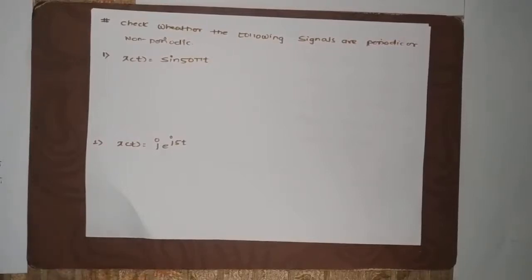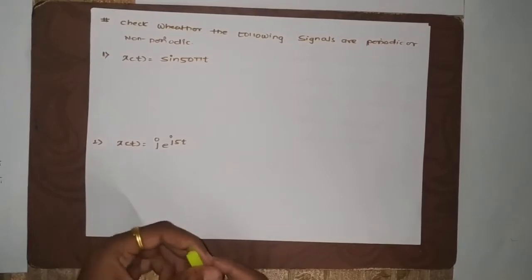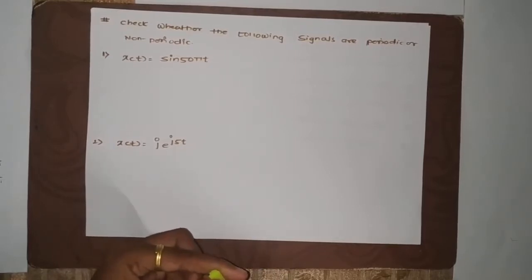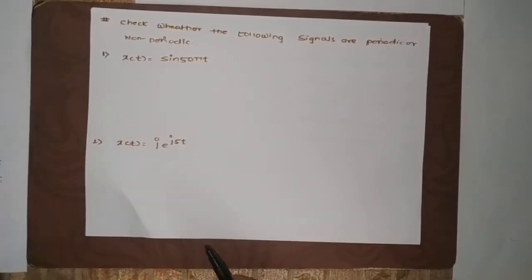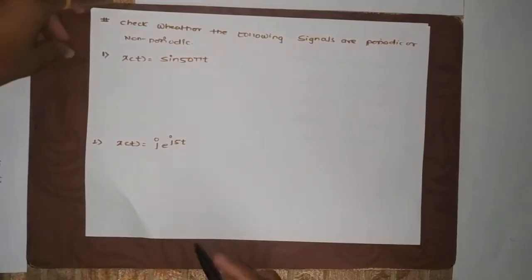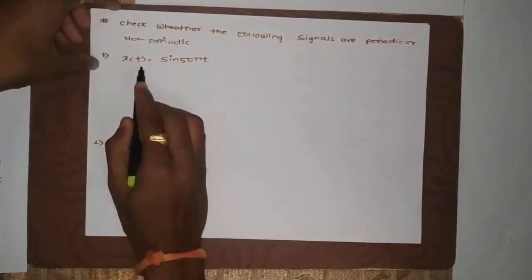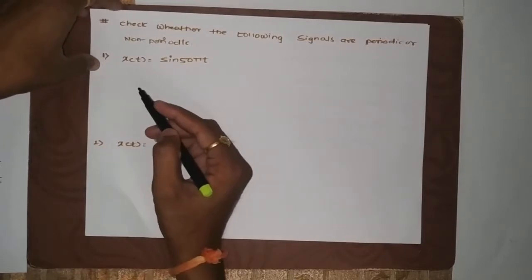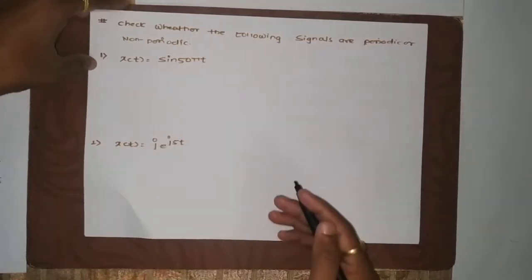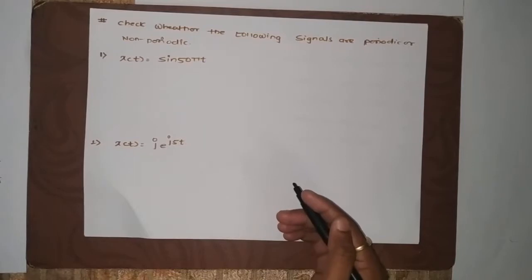In this video, we will discuss determining whether given signals are periodic or aperiodic in nature. The first example is x of t — a continuous time signal — and we have to check whether it is periodic or not. Always follow two steps while determining a signal's periodicity.